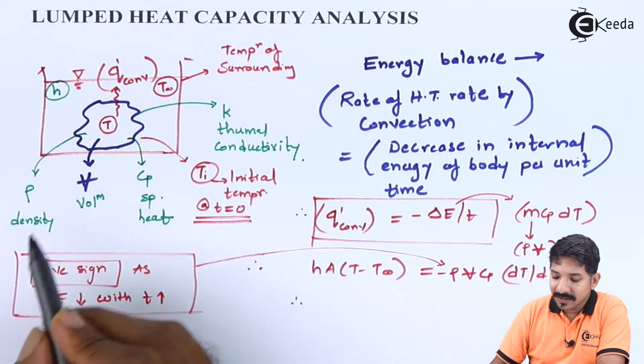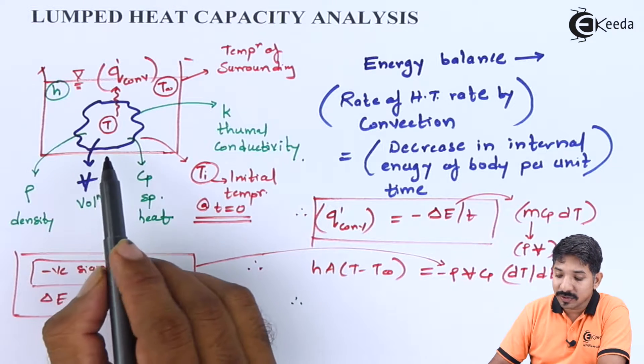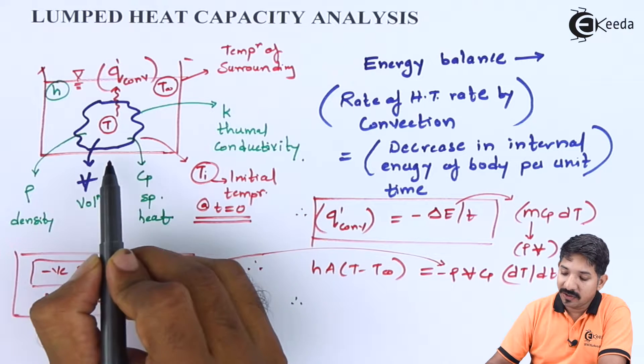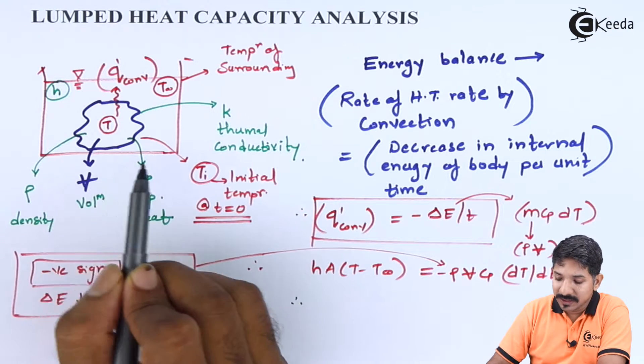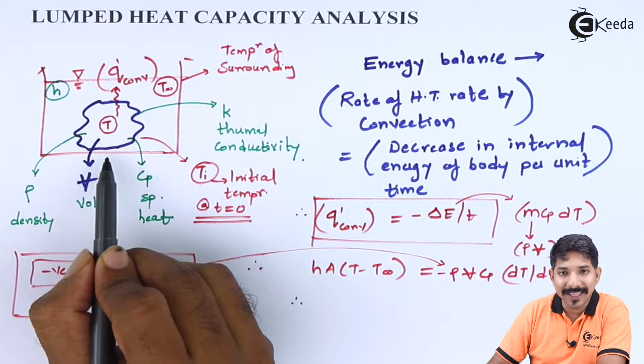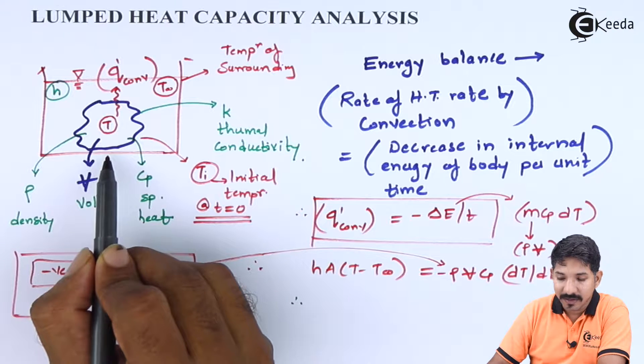Now before this, let us give the nomenclature to the body that we are going to see. This is the lumped heat capacity body. For this, you need to understand that dt by dx is almost negligible for the body.